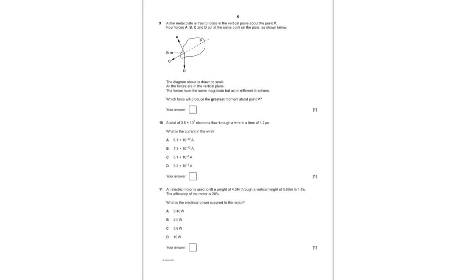With question number nine, we are given a thin metal plate which is free to rotate about point P in the vertical plane. Four forces A, B, C, and D acting on that point on the plate are shown. We have to figure out which of the four forces will produce the greatest moment. We know that any perpendicular forces will produce the greatest moment as M is equal to F times D. Technically, M is equal to F D sine theta. And as sine theta for A is 90 degrees, it would give us the greatest moment. Therefore, A is the answer.